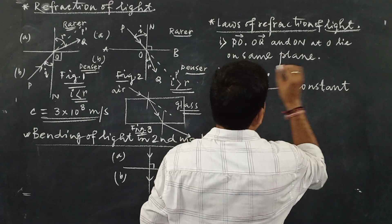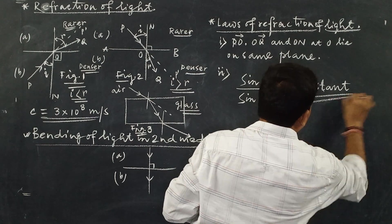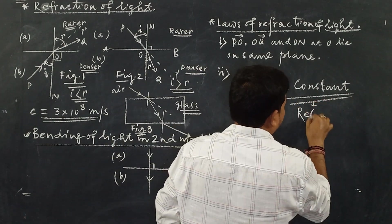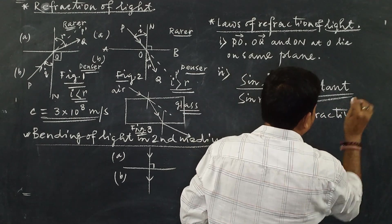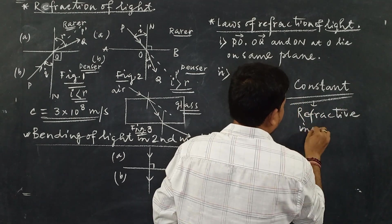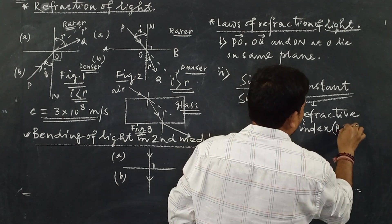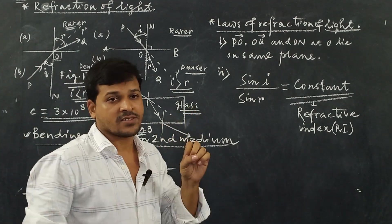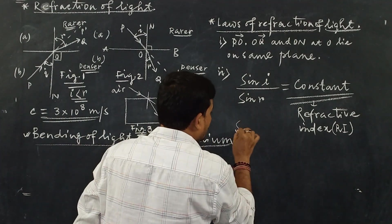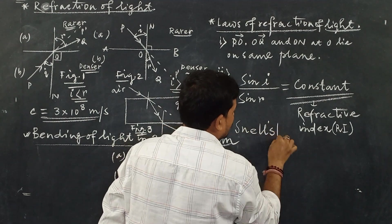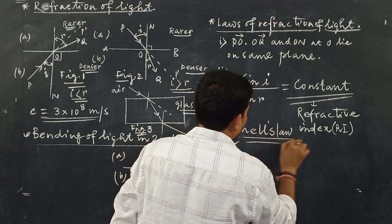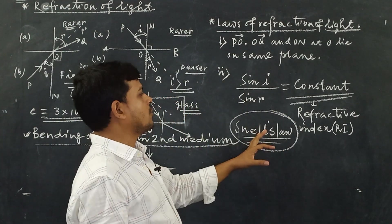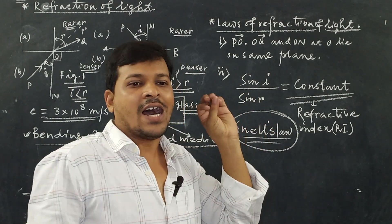This constant is called the refractive index, also denoted as RI. This second law of refraction of light is also known as Snell's law — a very frequently asked question in WBBSE and other board exams.